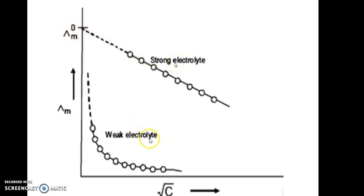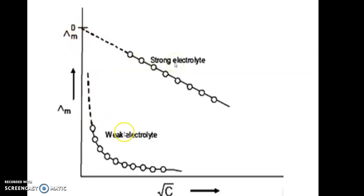But in the case of a weak electrolyte, the molar or equivalent conductance increases with dilution but does not touch the y-axis — instead, it moves parallel to the y-axis. Hence, by using the extrapolation method, we cannot find the molar conductance of a weak electrolyte at infinite dilution. For a strong electrolyte, the limiting value is reached, so extrapolation works.